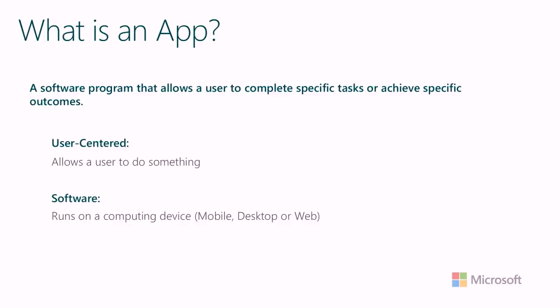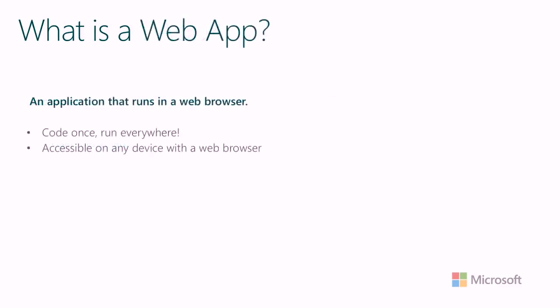The first thing we'll start with is figuring out who our users will be. But before we do that, let's define what exactly a web app is. An app in general is a software program that allows a user to complete specific tasks or achieve specific outcomes. It has to be user-centered — someone is using the app on the other end — and it runs on some sort of device. That distinction about what device an app runs on is what makes it a web app or a mobile app. We're focusing on web apps, which means we're creating things that a user will access via a web browser — from their mobile phone, desktop, or any device with a web browser.